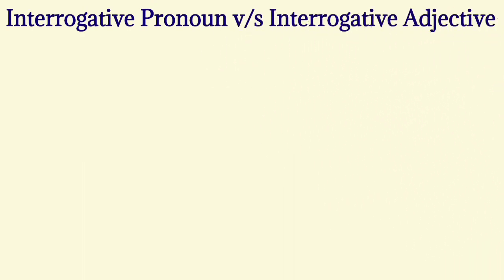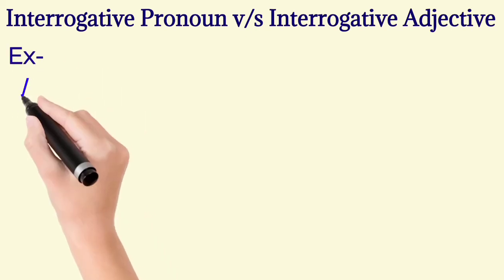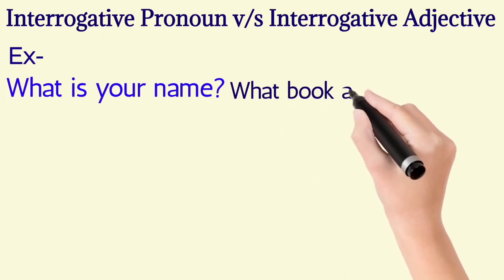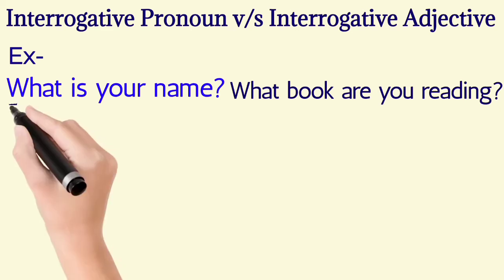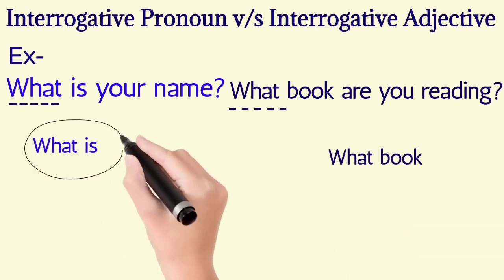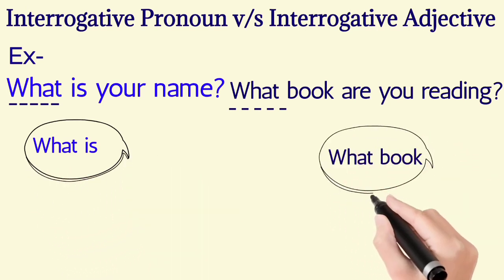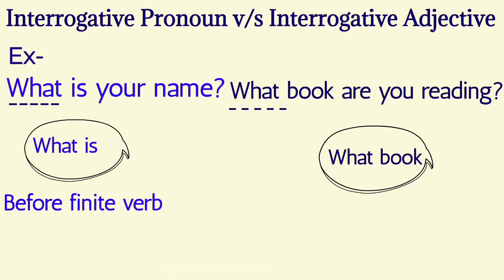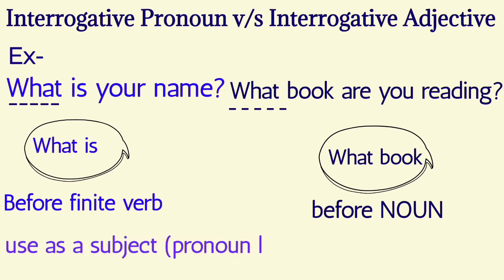Interrogative adjective versus interrogative pronoun. Examples: What is your name? What book are you reading? What is - this comes before finite verb and is used as a subject, as a pronoun. What book comes before noun and is used as an adjective modifying the noun.